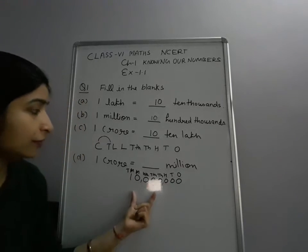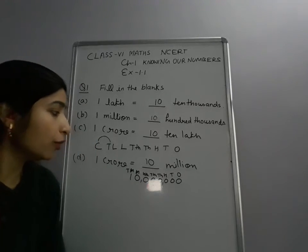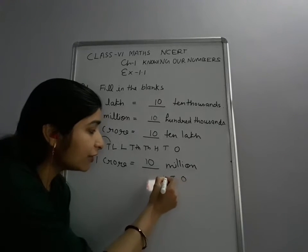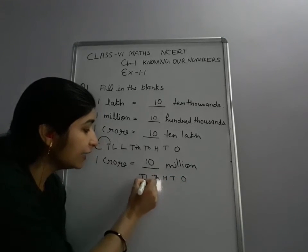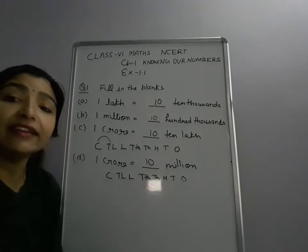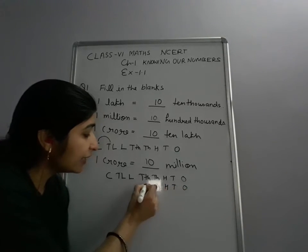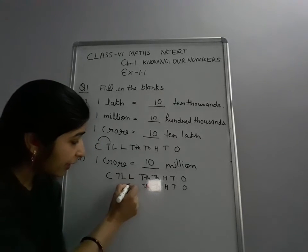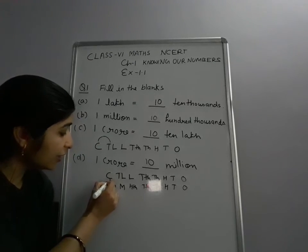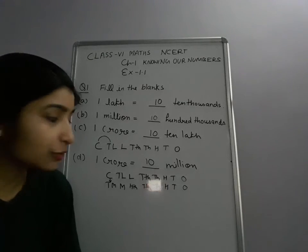So 1 crore is equal to 10 million. One another method is also: you can write down the Indian place value chart first — 1000, 10,000, 100,000 — and below it just write down the international place value system. Then here it is 100,000 and then million and 10 million. One crore is equal to 10 million. You can do it this way also.